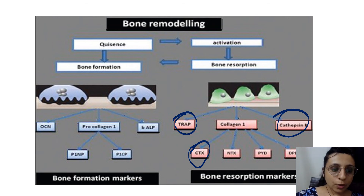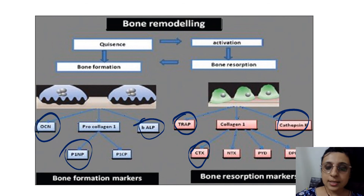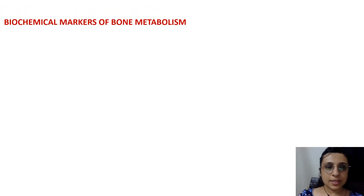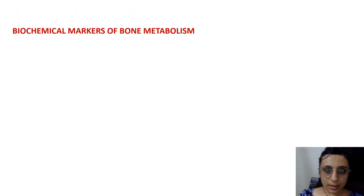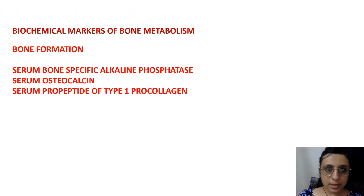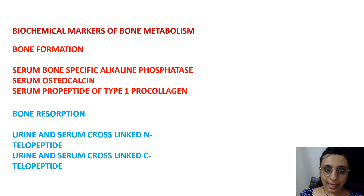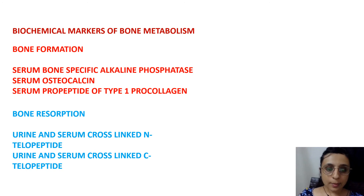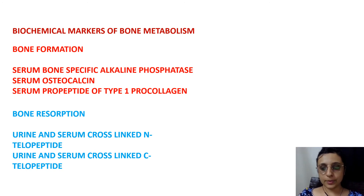Biochemical markers of bone metabolism include bone formation markers — osteocalcin and alkaline phosphatase — and bone resorption markers measurable in urine or serum, such as cross-linked N-telopeptide and C-telopeptide.